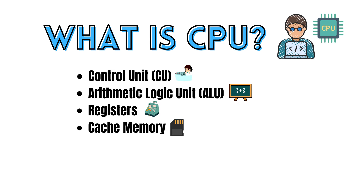Let's find out what purpose the clock serves in the CPU. The CPU operates on a clock, which is a timing device that synchronizes the execution of instructions. The clock speed is measured in hertz and indicates how many cycles per second the CPU can execute. Higher clock speeds generally result in better performance, but other factors also contribute to overall processing power.